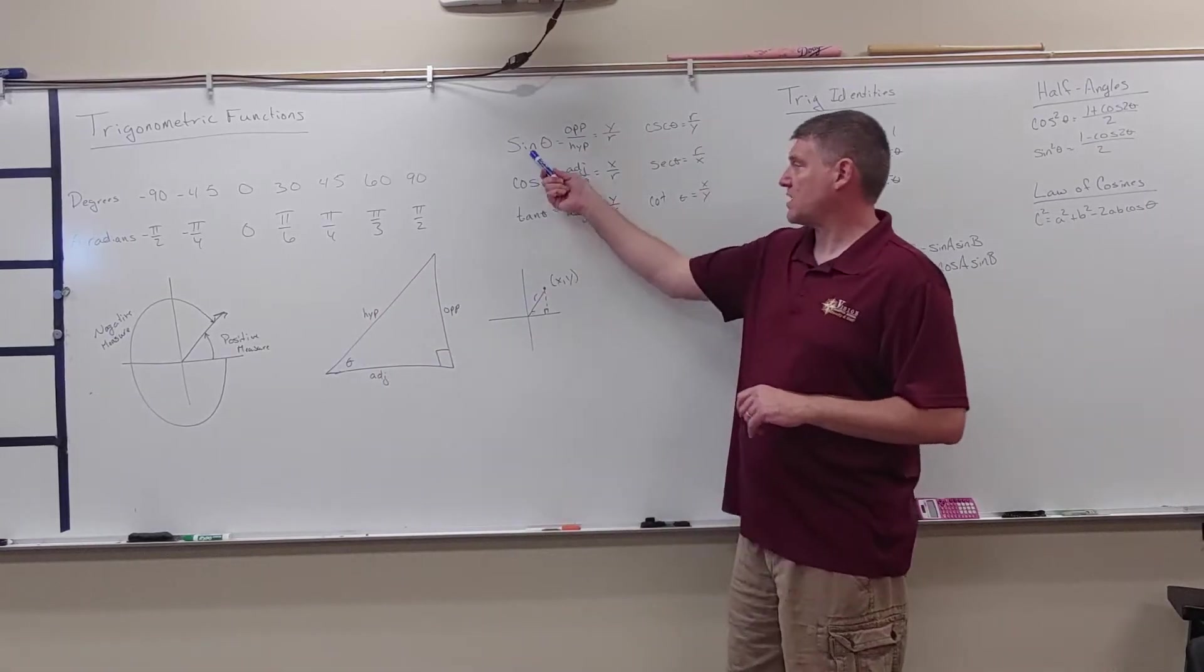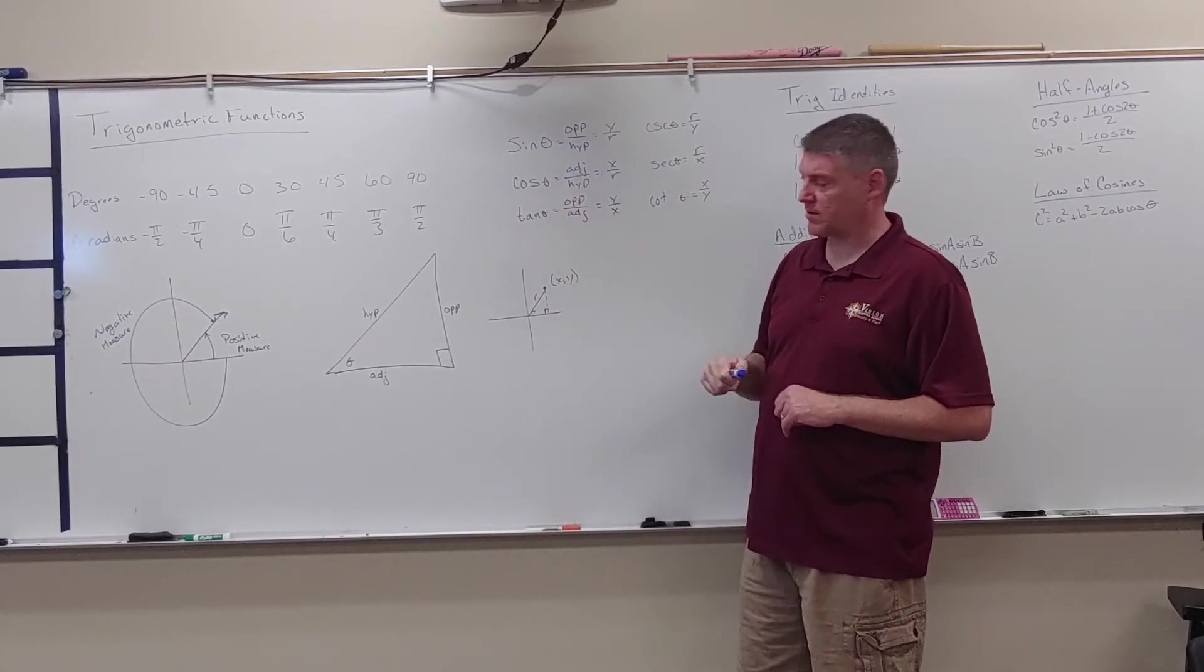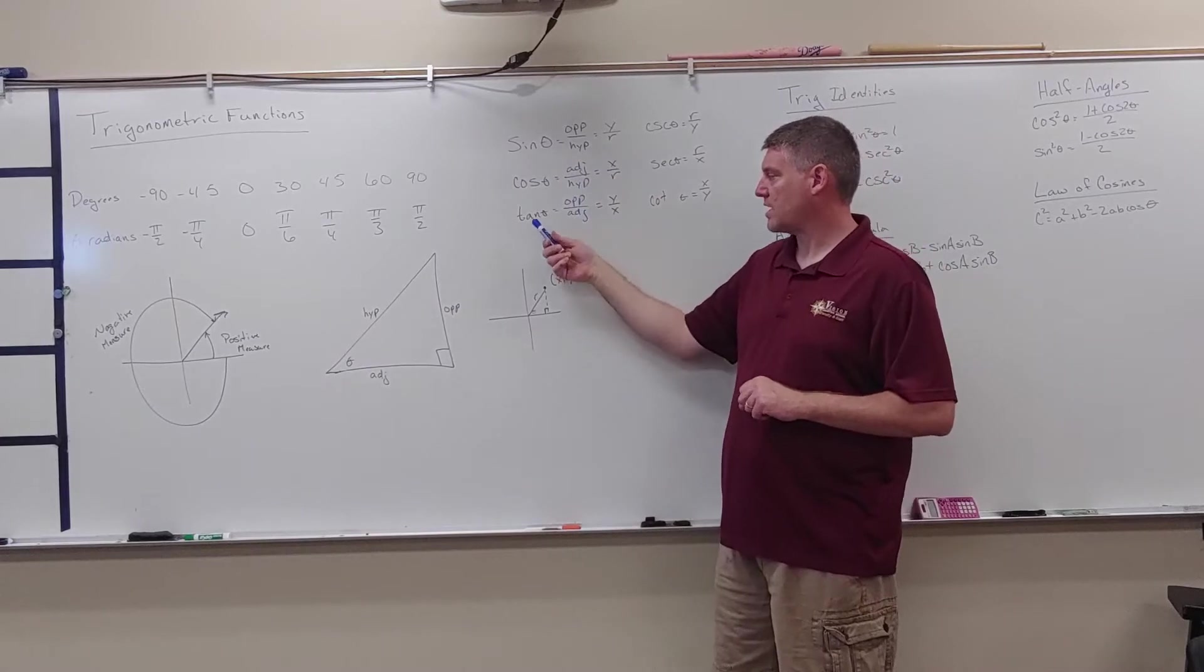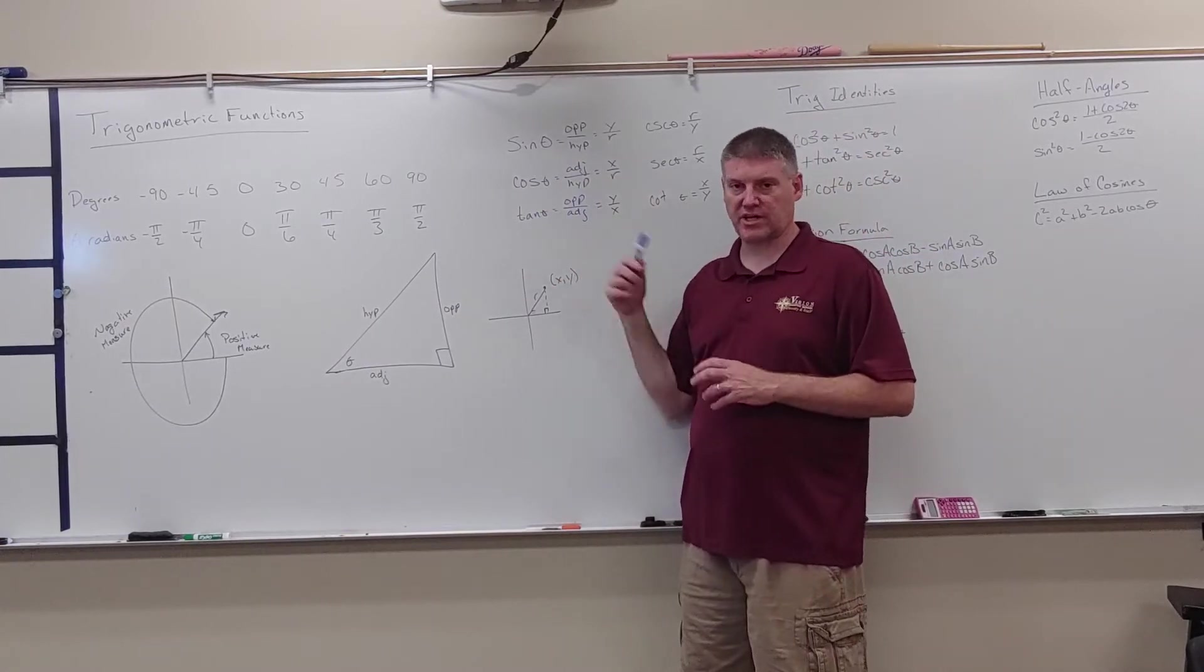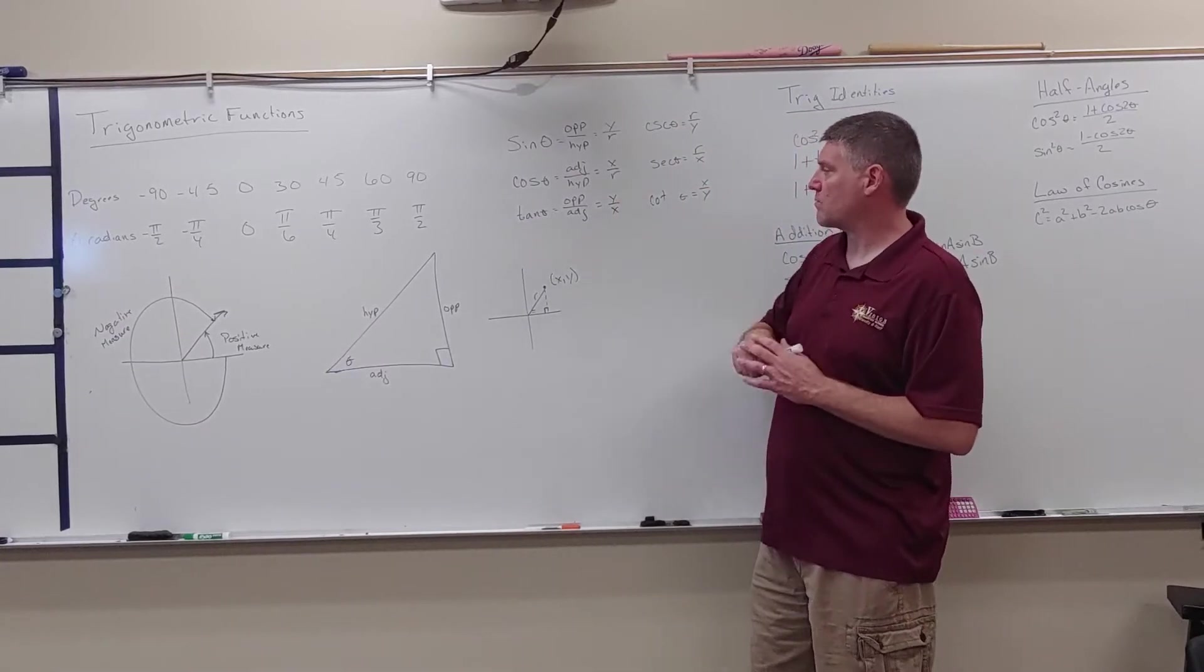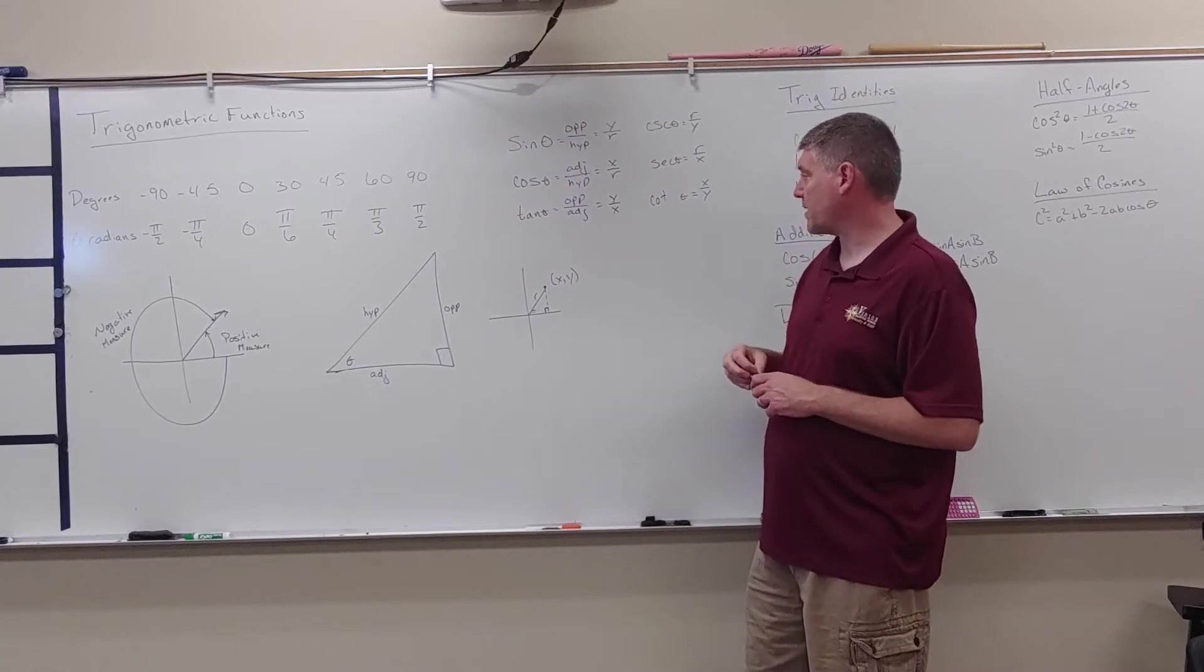Our sine of theta is the opposite over hypotenuse. The cosine is the adjacent side over the hypotenuse, and the tangent is opposite over adjacent. Now, cosecant, secant, and cotangent are reciprocals of sine, cosine, and tangent, respectively.